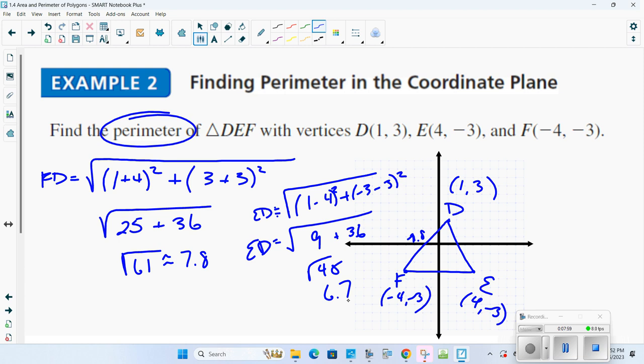Now, it's really nice when we have a line that goes straight across. I no longer have to necessarily use the distance formula. I can just count. So going across here would be 8. And so now, perimeter, 7.8 plus 6.7 plus 8. And I add all those up, I get 22.5.